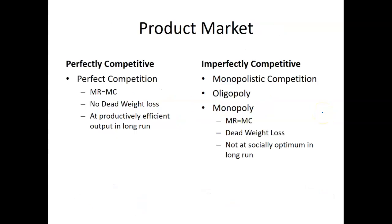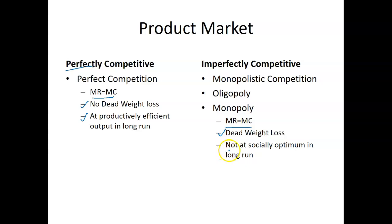In the product market, we have four different market structures: perfect competition, monopolistic competition, oligopoly, and monopoly. We always use marginal revenue equal to marginal cost to find the profit-maximizing output. In perfect competition, there is zero deadweight loss, and in the long run we're productively efficient — that's why it's called perfect competition. For imperfect competition, there's always deadweight loss, meaning we're not socially optimum, and it's very unlikely we're producing at the productively efficient output.